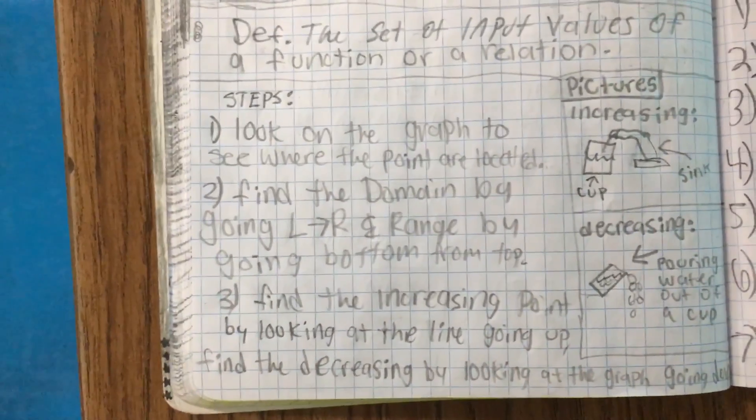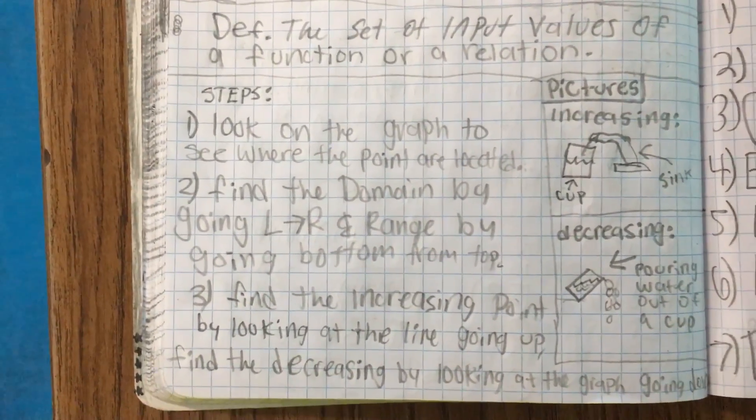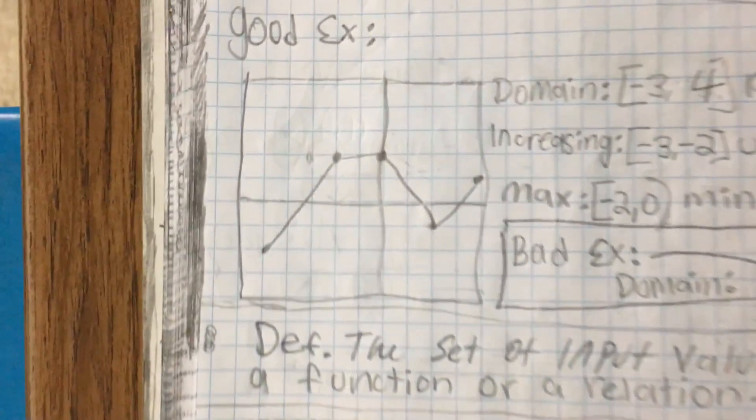Steps: look on the graph to somewhere on the point, like where the point is located, like right there.